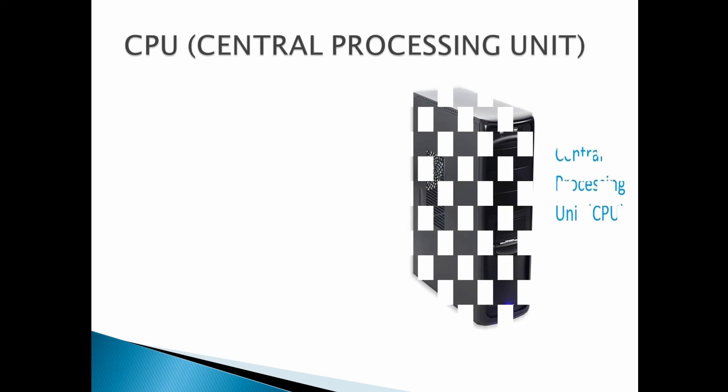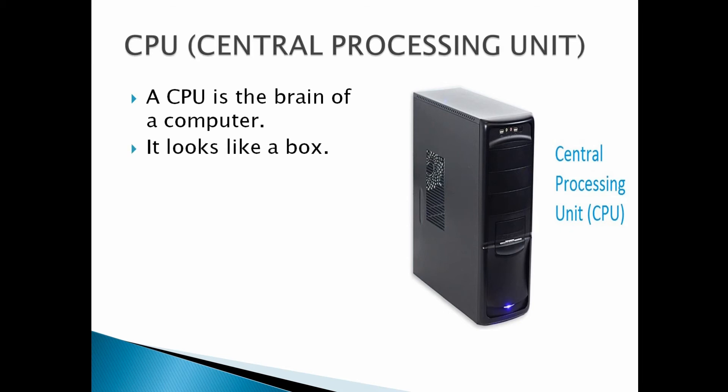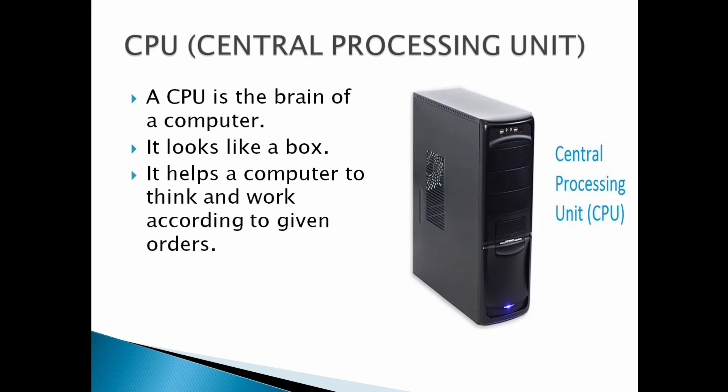The next part is CPU. The full form of CPU is Central Processing Unit. A CPU is the brain of a computer. It looks like a box. It helps a computer to think and work according to given orders.